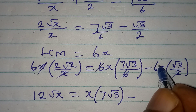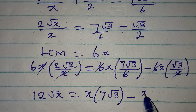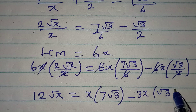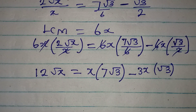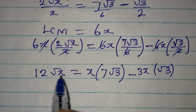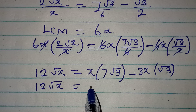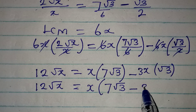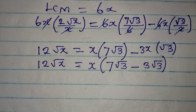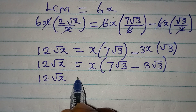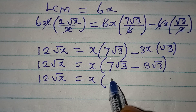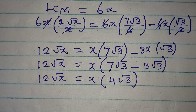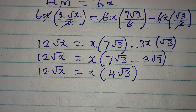Then minus — this cancels — and we have 3x multiplied by root 3. From here we can factor out x, so 12 root x equals x times open bracket 7 root 3 minus 3 root 3 close bracket, which gives us 4 root 3. So 12 root x equals x times 4 root 3.